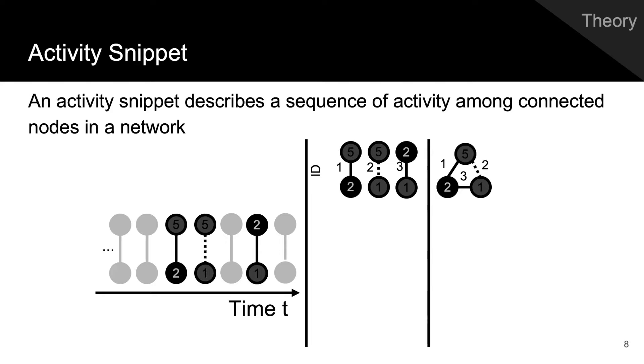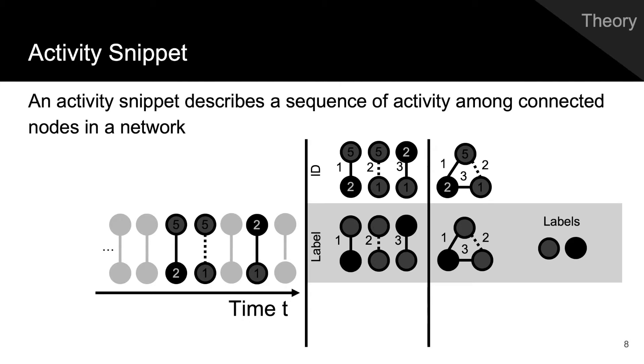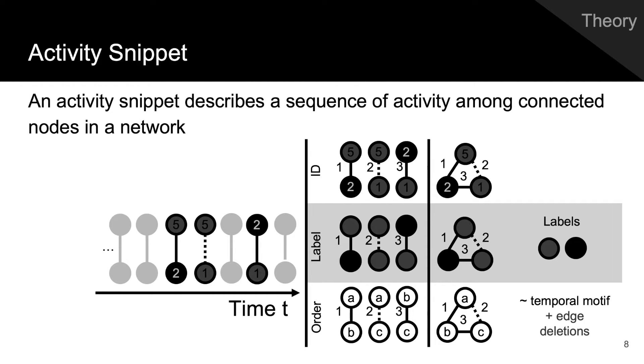We first define activity snippets. An activity snippet describes a sequence of activity, or edge updates, among connected nodes in a network. The edge updates need not be contiguous but they are temporally ordered. A view function may optionally be applied to the edge updates to replace the node IDs with their labels or their position in the snippet. If the node IDs are not replaced, the snippet is an exact sequence of activity. If they are replaced by their position in the sequence, then the snippet is analogous to temporal motifs but also captures edge deletions. The snippet has a duration given by the amount of time between the first and last updates in the snippet. It also has a size equal to the number of edge updates in the snippet. The parameters delta max and k max allow these to be controlled based on a practitioner's needs.